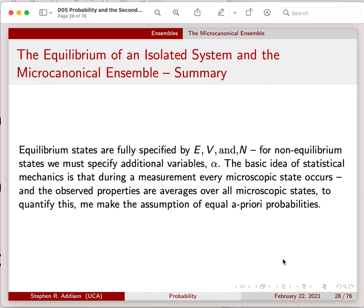Now I'm going to summarize some basic ideas. Equilibrium states are completely specified by E, V, and N. If we're not in equilibrium, we have to specify additional variables which we lump all under α. The basic idea of statistical mechanics is during every measurement, every microscopic state occurs, and the observed properties are averages over all of the microscopic states. To quantify this, we make the assumption of equal a priori probabilities, which is our standard working procedure.